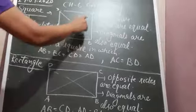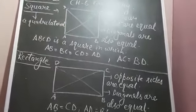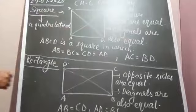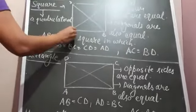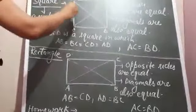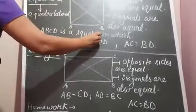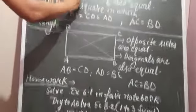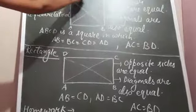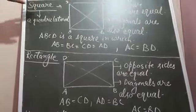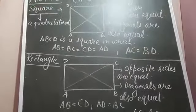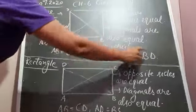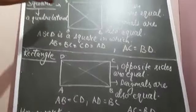These lines are called diagonals, and in a square the diagonals are also equal. The name of the square is ABCD. So ABCD is a square in which all sides are equal: AB equals BC, BC equals CD, CD equals DA. And the diagonals are also equal, that is AC equals BD. These are the properties of a square.